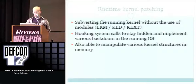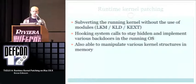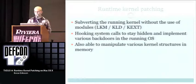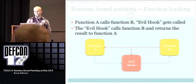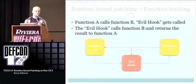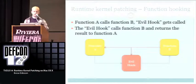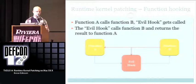We're going to skip the KEXTs approach and instead runtime patch the kernel directly. Runtime kernel patching is basically subverting the kernel without using kernel modules — that's the normal entry point for rootkits like WeaponX. We're going to hook system calls to stay hidden and implement various backdoors in the running OS by patching kernel memory directly. This is essentially function hooking — a man-in-the-middle attack between two functions. Function A calls function B, but instead, an evil hook function executes, then calls function B and passes the return value back, transparently.